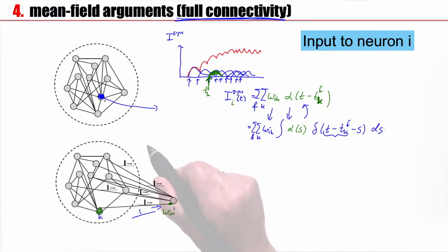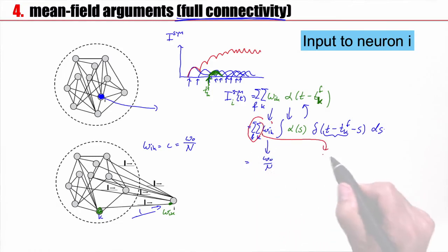I keep track of my w_ik and the sums. We have full connectivity and a completely homogeneous network. All my synapses w_ik have the same constant value. I pick this constant as w_0 divided by n. The factor n will come in handily in just a minute. Now the sum over k can be moved inside. I have sum over k, sum over f, delta t minus t_k^f minus s, ds, the integral, and alpha of s. I take this 1 over n and put it inside here.